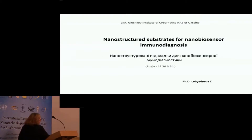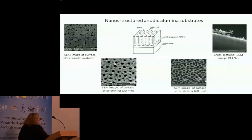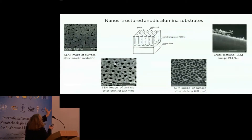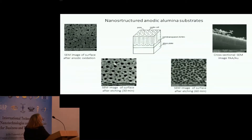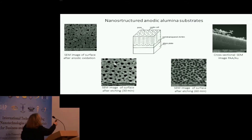Nanoporous anodic alumina is a very popular object for developments in different fields now. It has a self-ordering nanoporous structure. The scale is 220 hundred nanometers. The dimension of pore is from some nanometers to some hundred nanometers. In this picture, 100 nanometers is the scale line on the image.